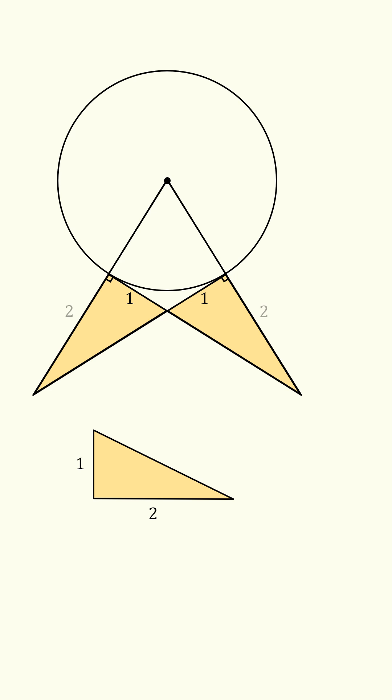From here, we can solve for the hypotenuse of the triangle. It will be the square root of 1 squared plus 2 squared, which is equal to the square root of 5.